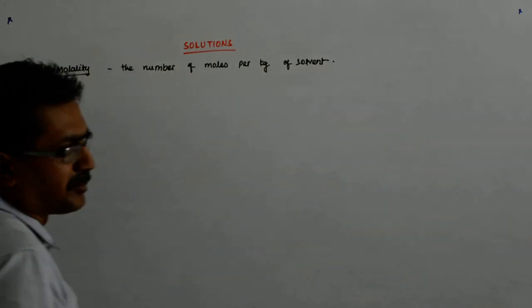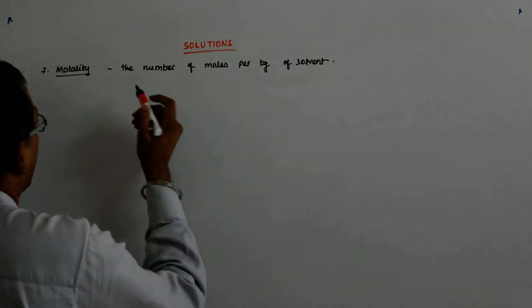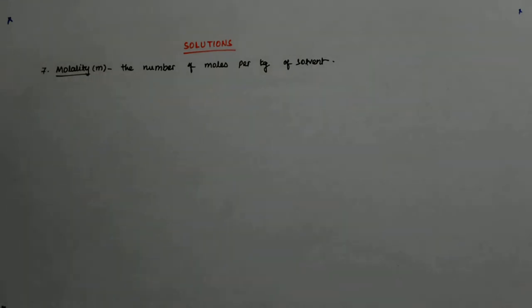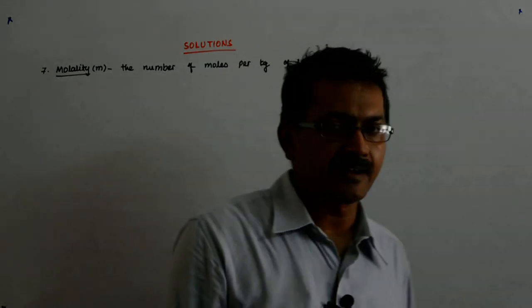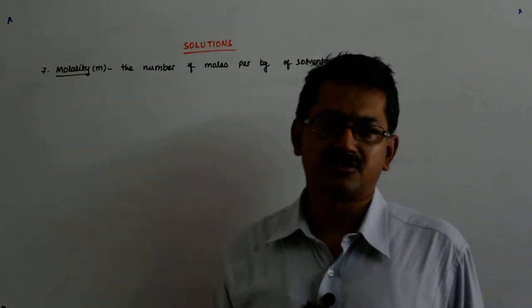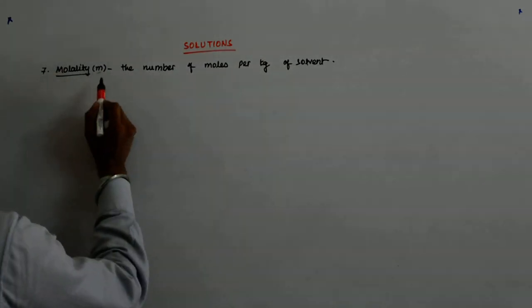per kg of solvent. The number of moles per kg of solvent. And it is designated by m, small m. The molality was being designated by capital M. This is designated by small m.